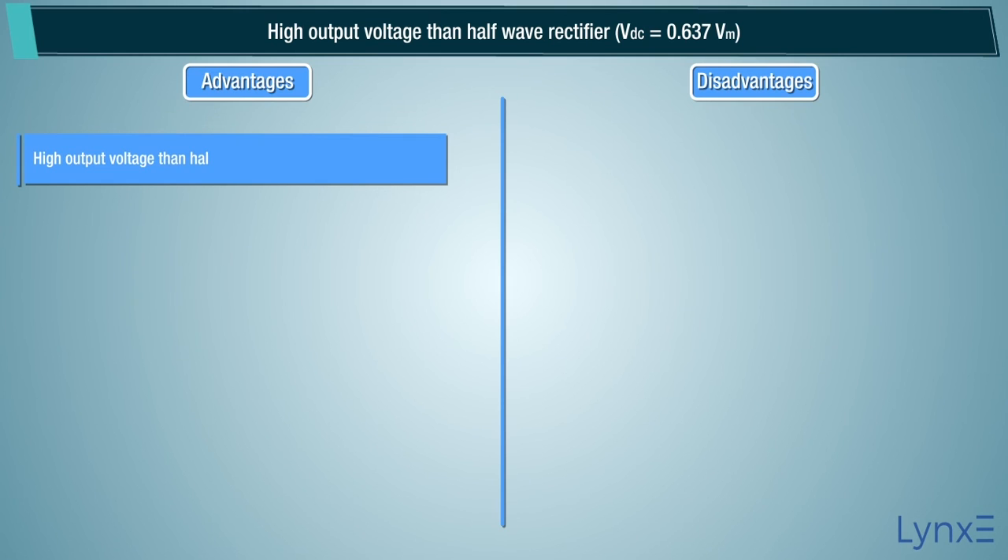Advantages and disadvantages of full wave rectifier. Advantages: High output voltage than half wave rectifier. VDC equals 0.637 Vm. Rectification efficiency is high, 81.2%. Ripple factor is low, 0.421. DC saturation of the core is avoided.